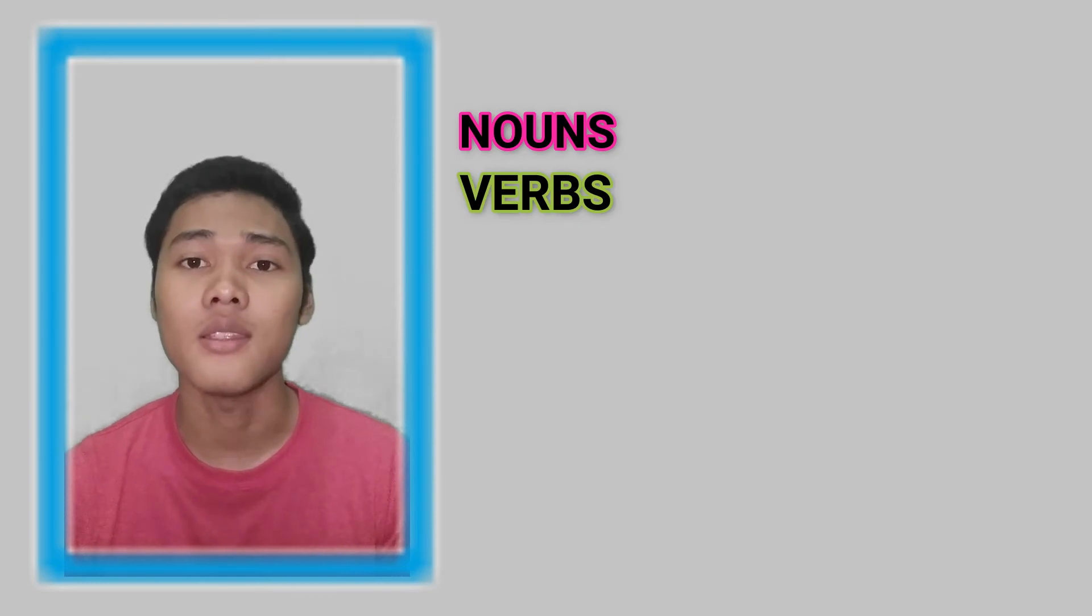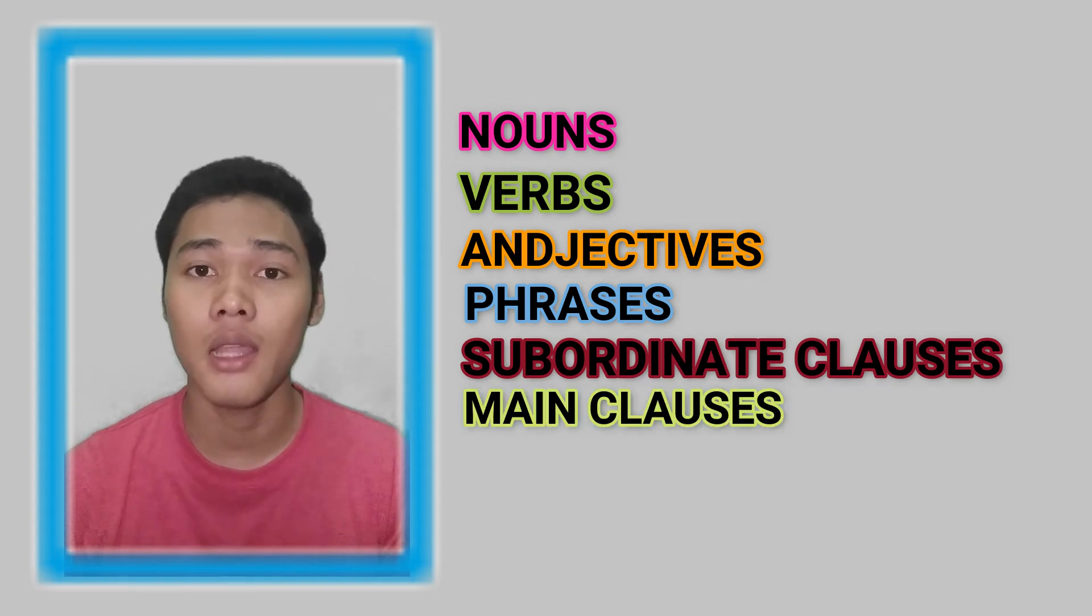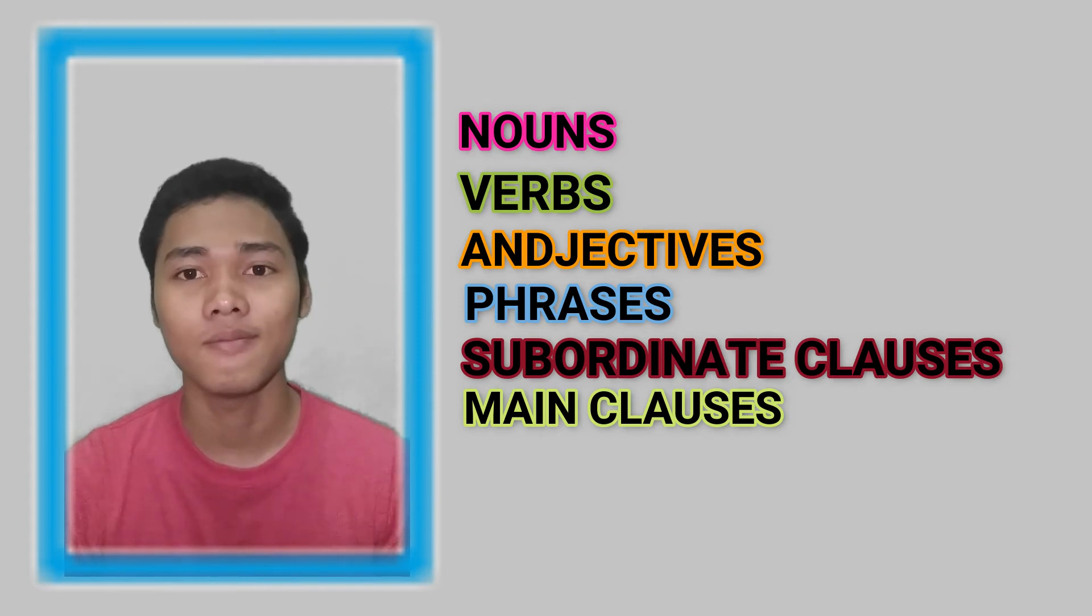The coordinate conjunctions can join nouns, verbs, adjectives, phrases, subordinate clauses, or even main clauses. They just must join together two of the same thing. Well, let's see the examples. Here are examples of how to use parallel structure with coordinate conjunctions.